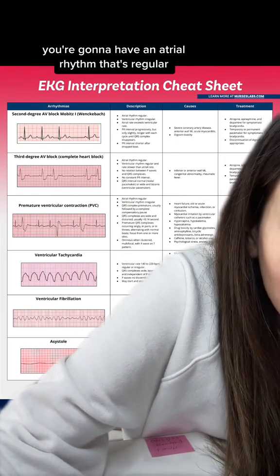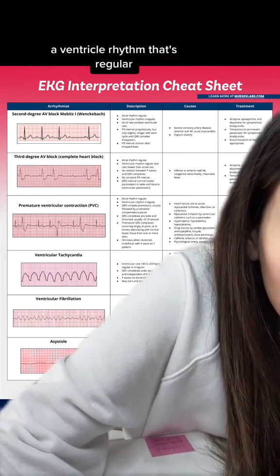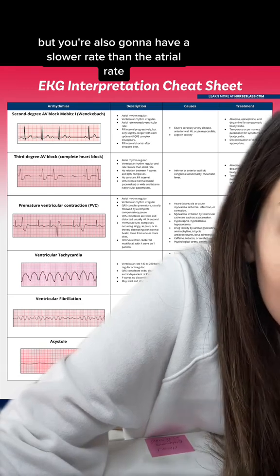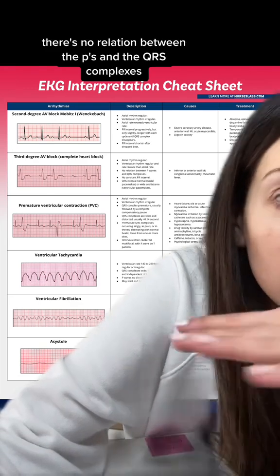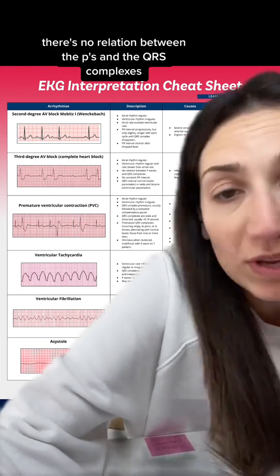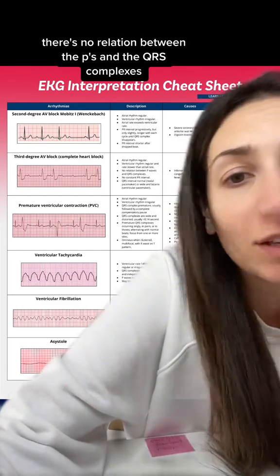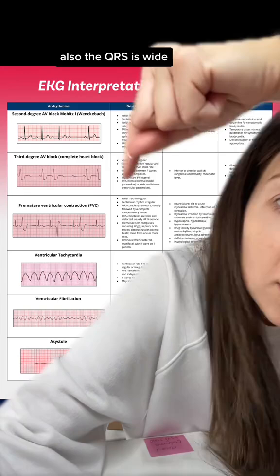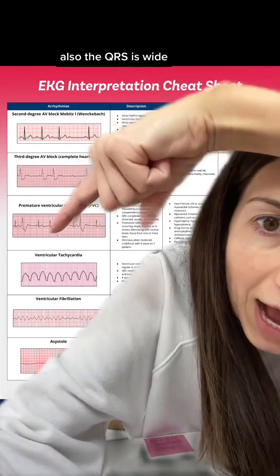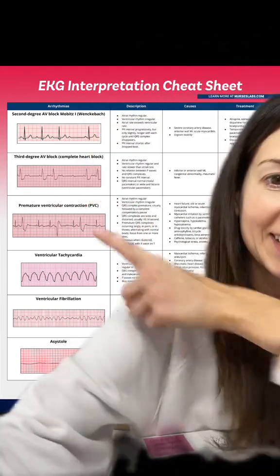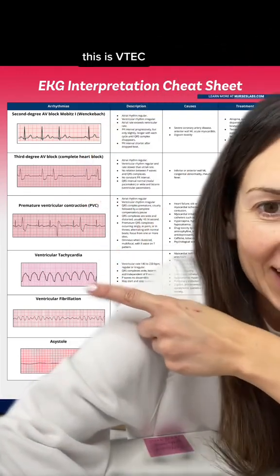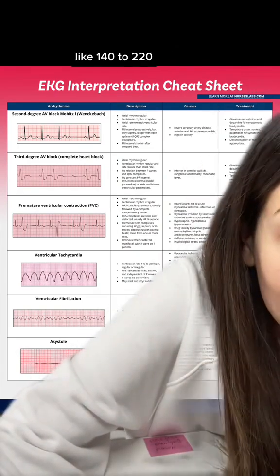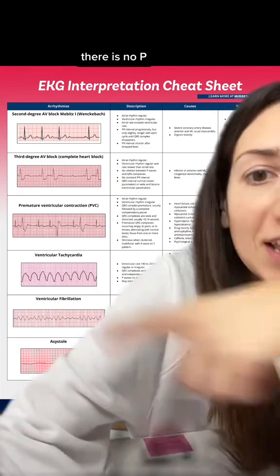Third degree AV block, or complete heart block — you're going to have an atrial rhythm that's regular and a ventricular rhythm that's regular, but the ventricular rate is slower than the atrial rate. There's no relation between the P's and the QRS complexes — they're not even talking to each other.